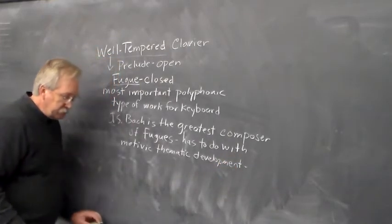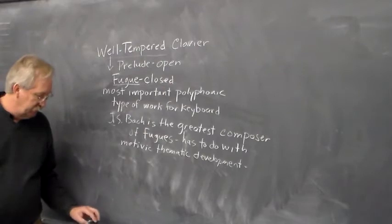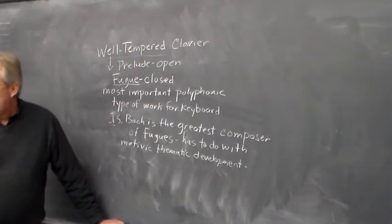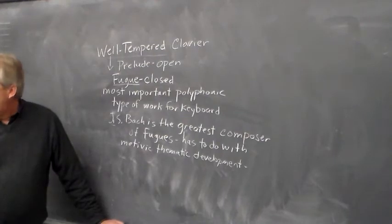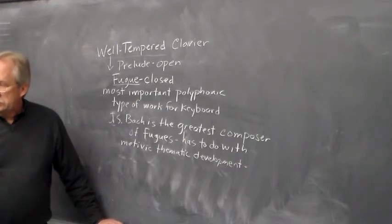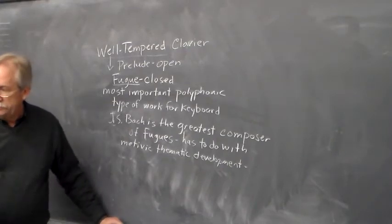So these different contrapuntal compositional techniques that arose with the composition of fugues then became the basic tools for composers to develop their thematic material. It was a way that it had a sense of coherence and is the intellectual aspects of the compositional process, among other things, that have to do with organizational features.